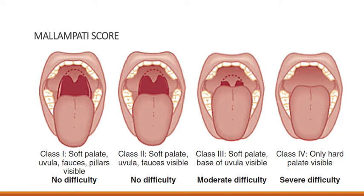We can also assess the airway by looking at the open mouth and visualizing structures directly — this is the Mallampati score. Class 1 is generally considered easy to intubate: we can visualize the complete uvula, the soft palate, and the pillars. Class 2 is when we don't visualize the pillars but see the soft palate and whole uvula. Class 3 is when we see the soft palate and only the base of the uvula. Class 4 is when we only see the hard palate. Classes 1 and 2 are considered easy, while classes 3 and 4 are challenging.